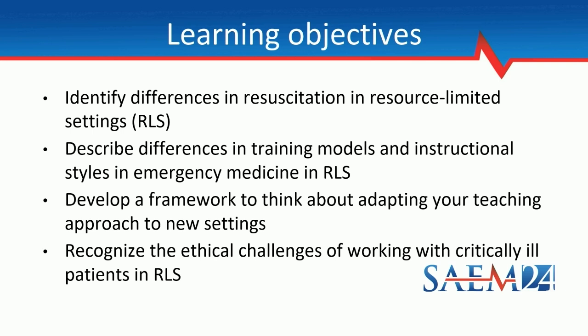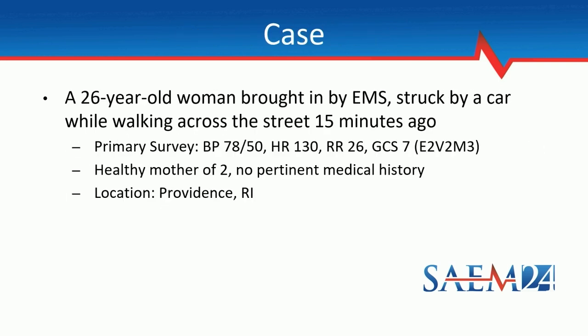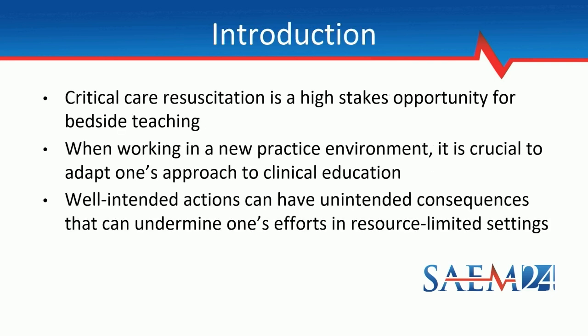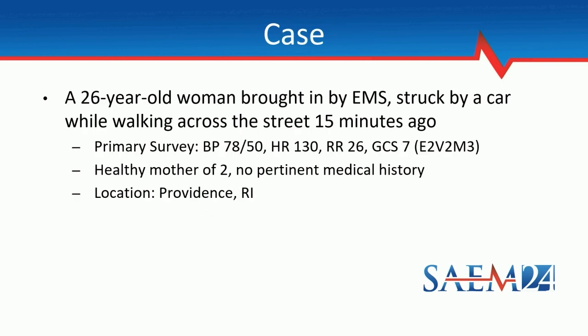Let's go ahead and jump into a case. We have a 26-year-old woman who was brought in by EMS after being struck by a car walking across the street about 15 minutes ago — probably not a terribly unfamiliar situation for anybody in the room. On primary survey, she's hypotensive, tachycardic, tachypneic with a GCS of seven.